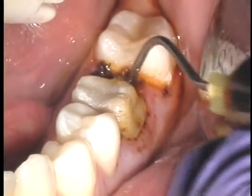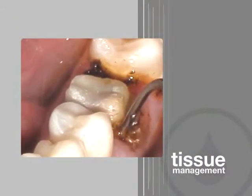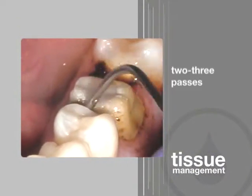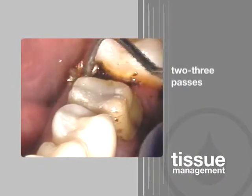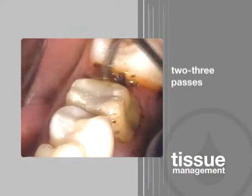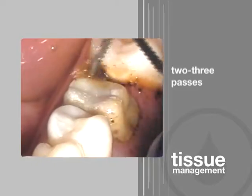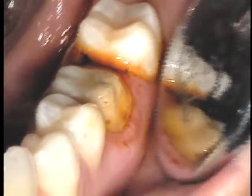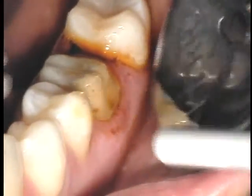Depending on the patient's periodontal and systemic health, hemostasis may be obtained in as little as 2 to 3 passes around the sulcus, or up to as many as 20 or 30. Hemostasis is realized when the new coagulum stops forming.